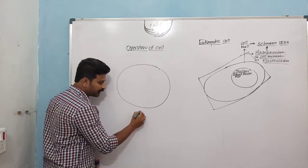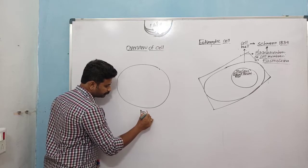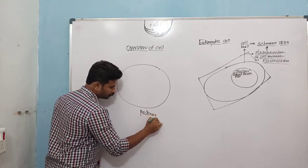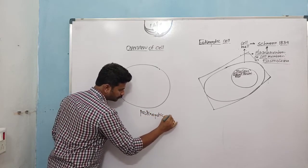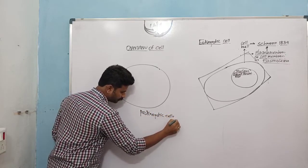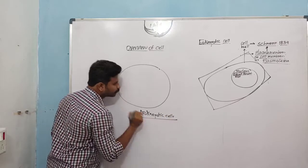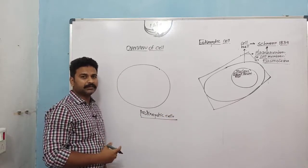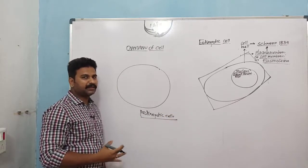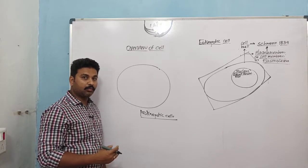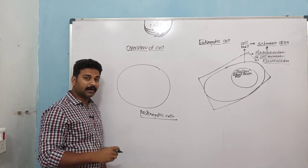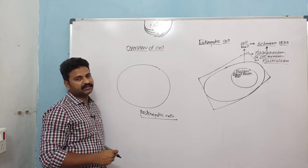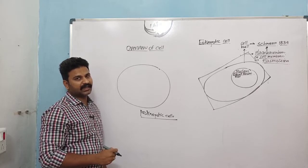By definition, a prokaryotic cell is a cell which does not have a membrane-bound nucleus, and a eukaryotic cell is a cell which has a membrane-bound nucleus.